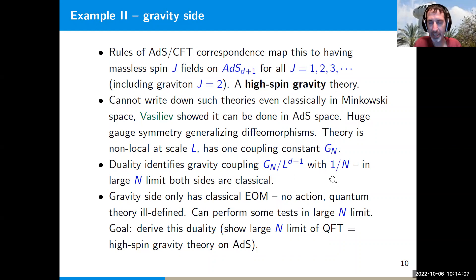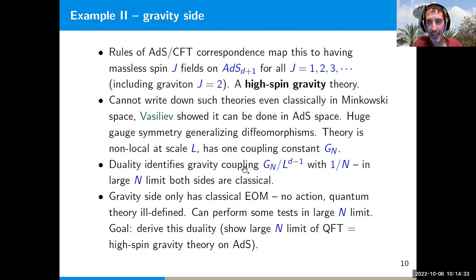Not too much is known about the gravity side — in fact, all that's known is really just its classical equations of motion, and there isn't even an action from which these are derived. It's not clear how to define any quantum generalization of these high-spin gravity theories in the absence of an action. Nothing is known about the quantum theory on the gravity side, but the duality can be tested classically in the large-N limit, and some correlation functions have been compared to give evidence that it is correct.